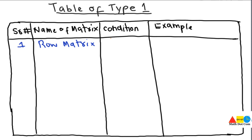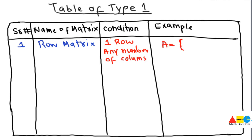The first matrix in Type 1 is the row matrix. The condition required is that it must have exactly one row, and the columns can be any number. For example, a matrix with 1 row and 3 columns is a row matrix. Another example with 1 row and 2 columns is also a row matrix. The columns can vary, but the number of rows must be exactly 1.